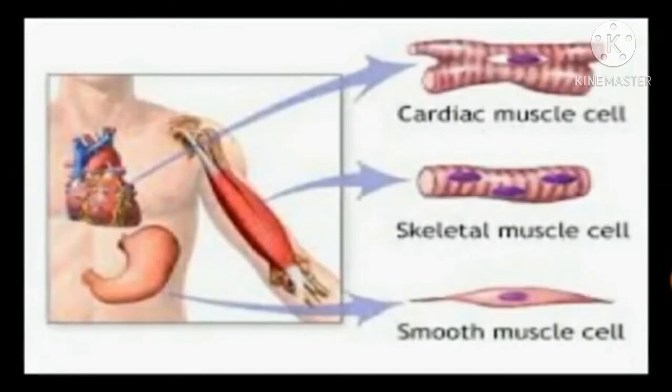Second, heart or cardiac muscles: the movement of these muscles is involuntary, meaning it does not depend upon our wish. These muscles bring about the contraction and relaxation known as heartbeating. Cardiac muscles cause our heart to relax and contract continuously at a rate of about 70 times per minute.